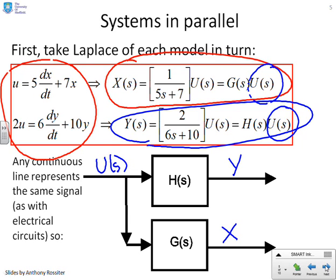The notation we're using is very much like electrical circuits. So if a line is continuous, and you can consider this line here being continuous up to there, but also continuous round here, then you consider that to be sharing the same signal. So when I take a point off a line, and you'll see the arrows are all going in the same direction,